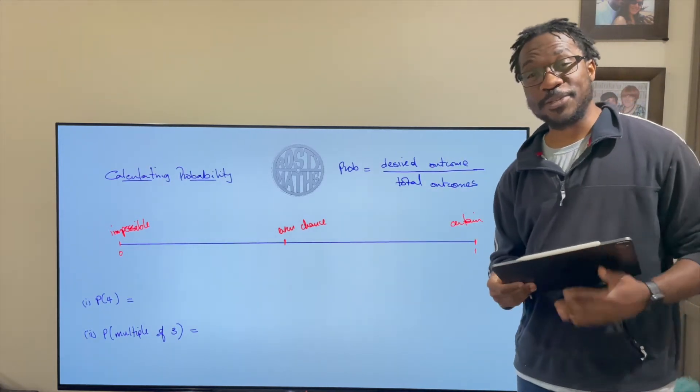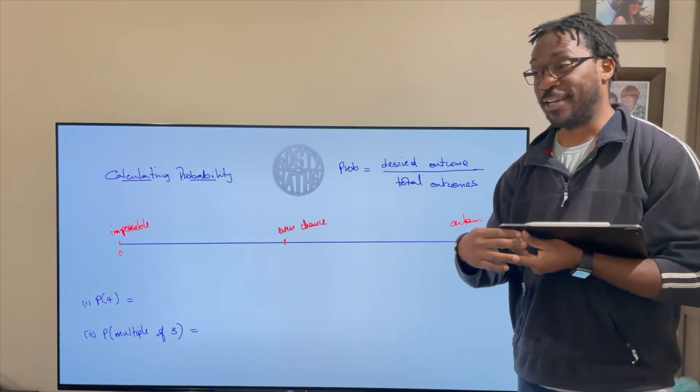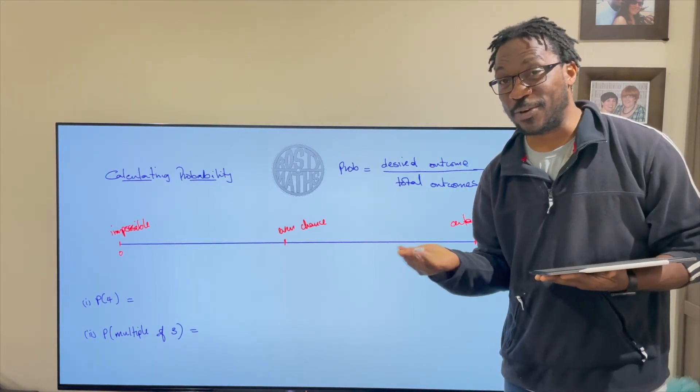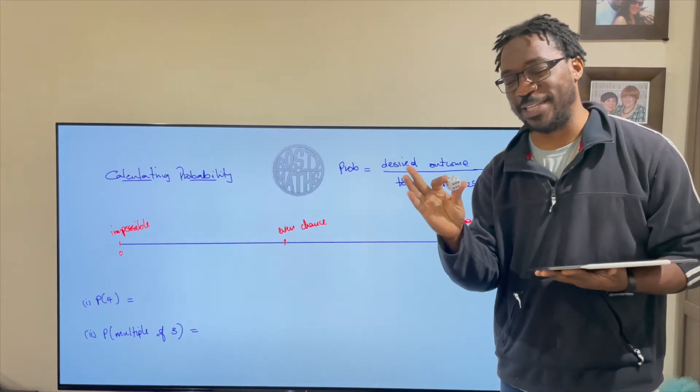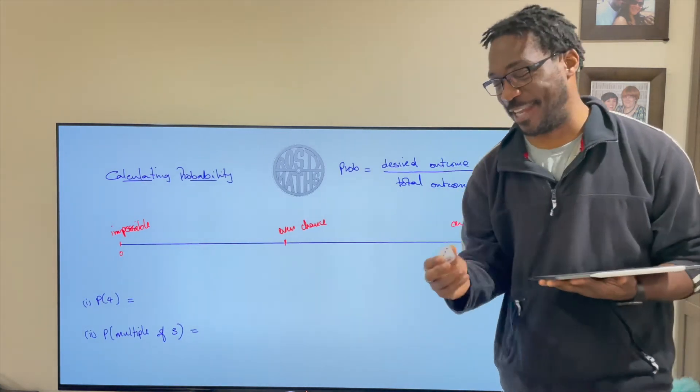Now before I actually do some calculation on that I have a die. The correct terminology is die, more than one you call it dice but when it's one it's a die but for the sake of those people who might get upset with me let's call this a dice for now.